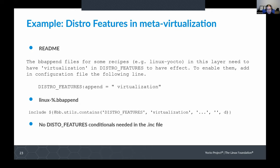Looking at meta-virtualization as an example: the bbappend files for some recipes in this layer need virtualization to be in DISTRO_FEATURES to have effect. This means adding the meta-virtualization layer into your build doesn't automatically modify your kernel build configuration — you need to add the virtualization distro feature before those configuration changes happen. This is implemented in a bbappend file via conditional inclusion of a virtualization.inc file. You don't need distro feature checks within the .inc file itself — that's a good place to look if you want an example of how to use this.